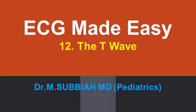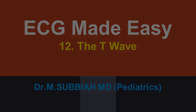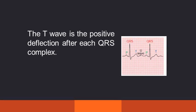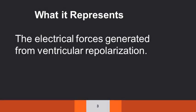Good morning to all. Welcome to the ECG Made Easy class. Today I am going to discuss about the T wave abnormalities. The T wave is the positive deflection seen after each QRS complex, and it represents the electrical forces generated from ventricular repolarization.